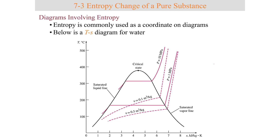Entropy will be used often, especially from this point on when looking at processes, so entropy is commonly used as a coordinate on these diagrams. This is what we call a TS diagram — a TS diagram for water — where the constant pressure lines look much the same as they did in T-nu diagrams.